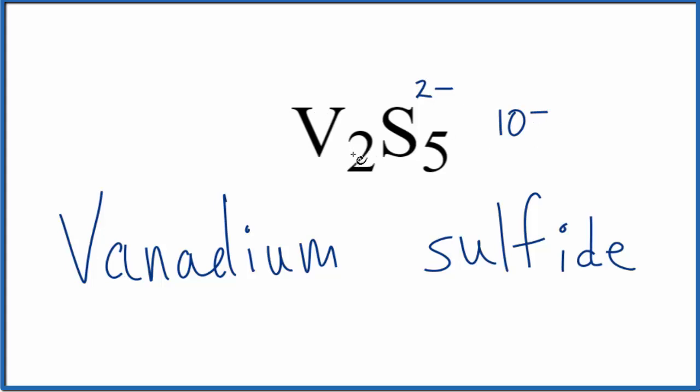That means the vanadium is going to have to be a 5 plus. 2 times 5 plus. That'll give us the 10 plus. So these balance out net charge of zero.